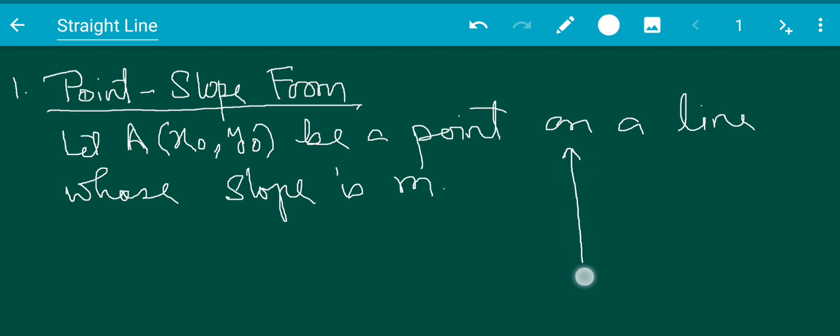So if I draw a graph or diagram - suppose this is the line. This is (x₀, y₀). This is your slope, slope m.